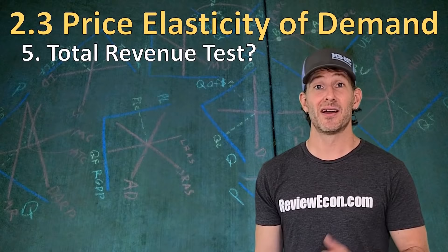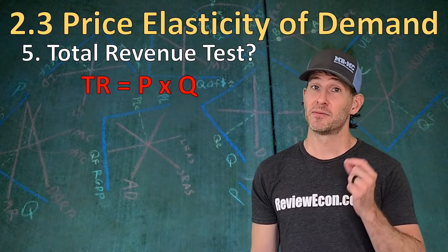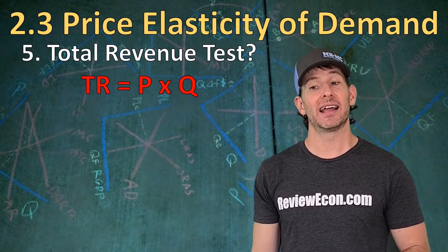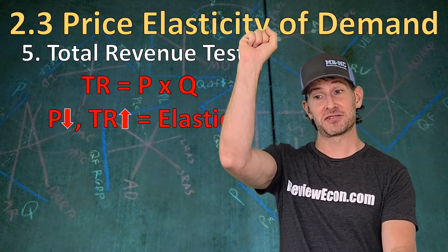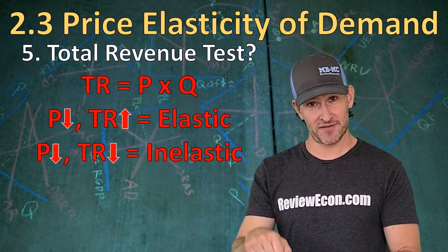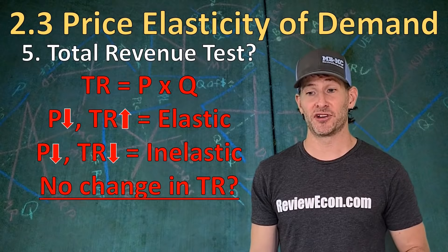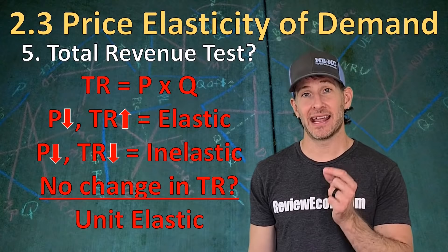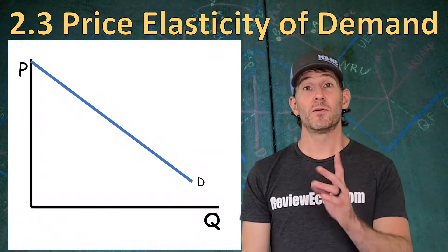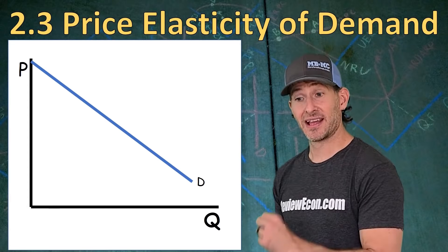The fifth test is the total revenue test. To do it, you calculate price times quantity — that's total revenue — and look at what's happening between price and total revenue for a particular range of the demand curve. If price falls and total revenue rises, they're going in opposite directions — that's an elastic demand curve. If price falls and total revenue falls, both going in the same direction — that's the inelastic portion. If there's no change in total revenue as price changes, we call that unit elastic demand.